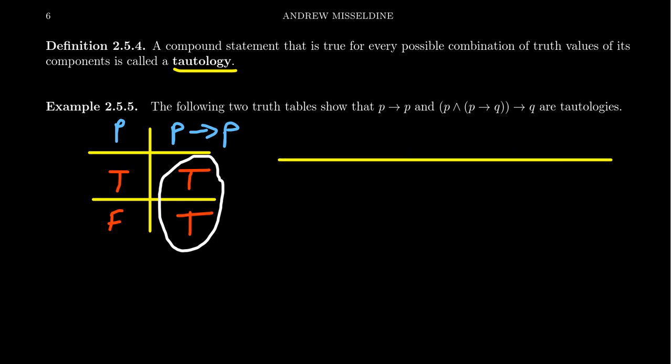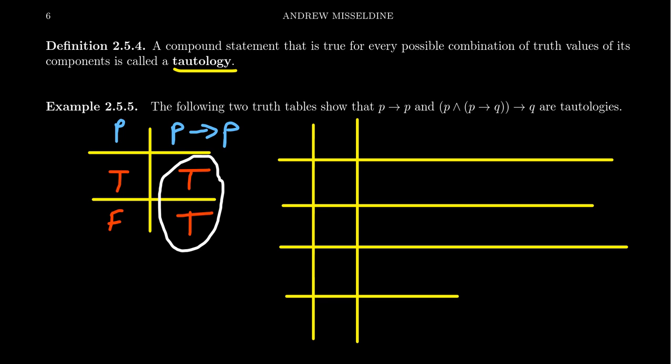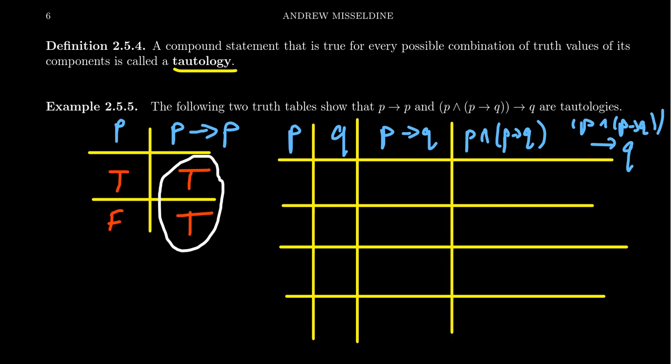Take the statement p and p implies q—that compounded statement—implies q. This one's a little bit more involved, so let's take our time to draw it. There's only two primitives in play: there is p and q. So we're going to have four rows for that.